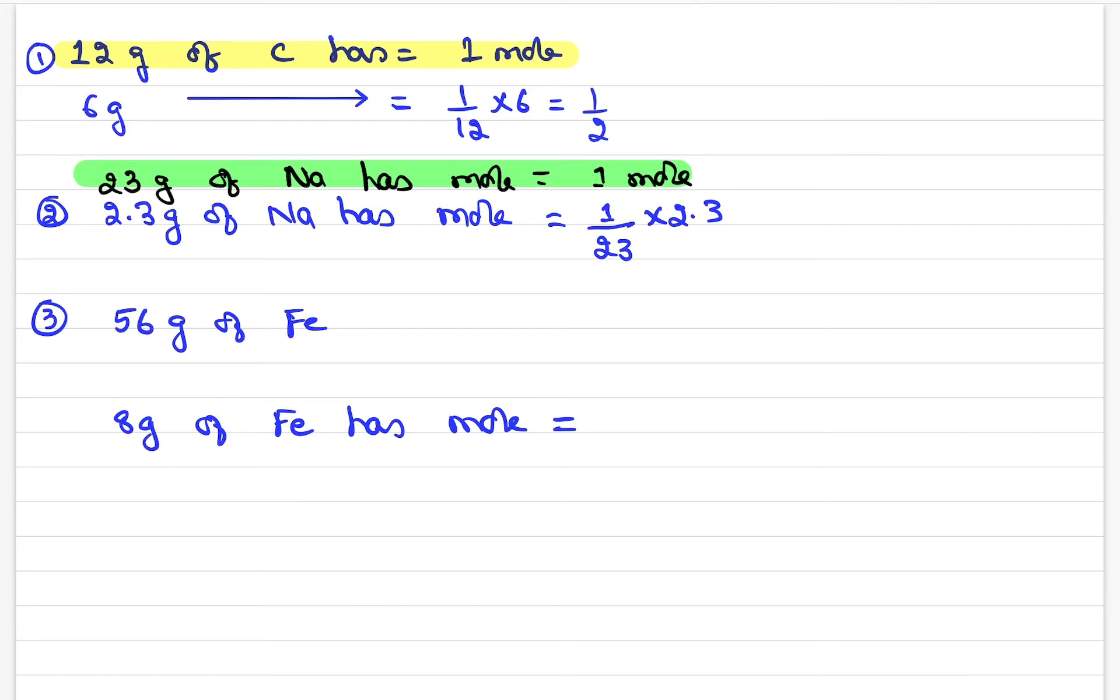Molar mass 56 gram of iron has mole 1. Then you will say that 1 gram of iron has mole, so your answer is maths app is 1/56. So 8 gram is how much is 1/56 × 8, the answer is 1/7 mole.